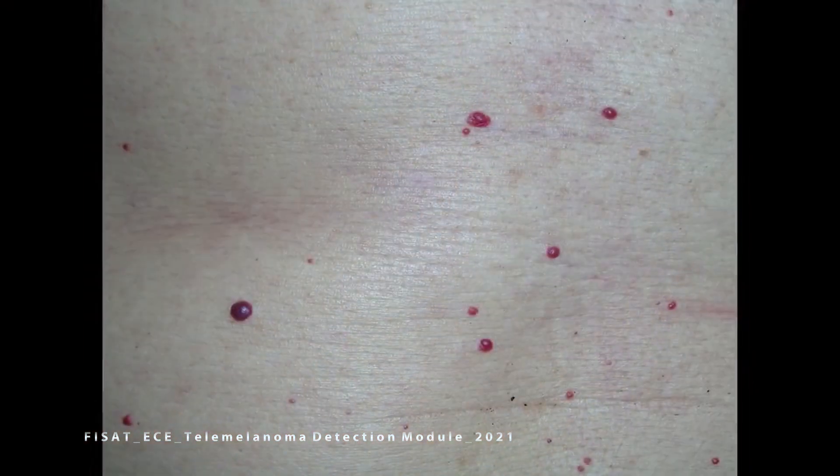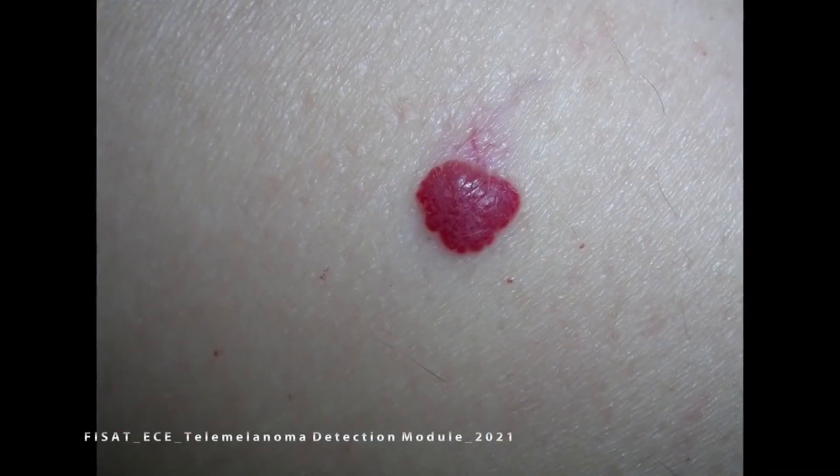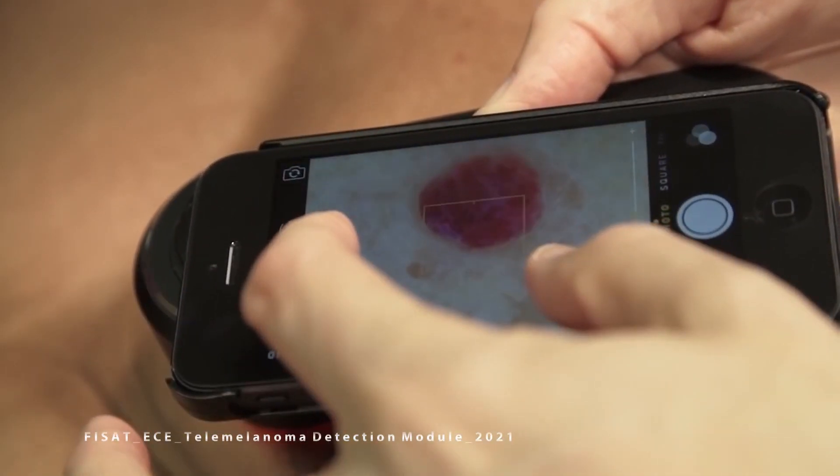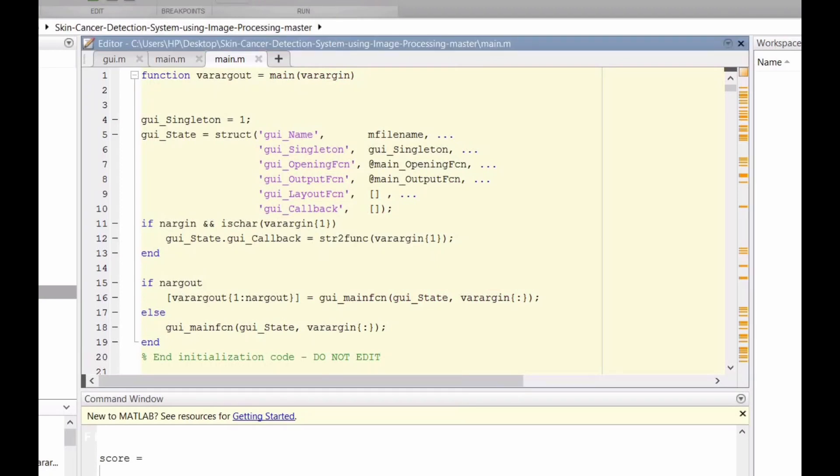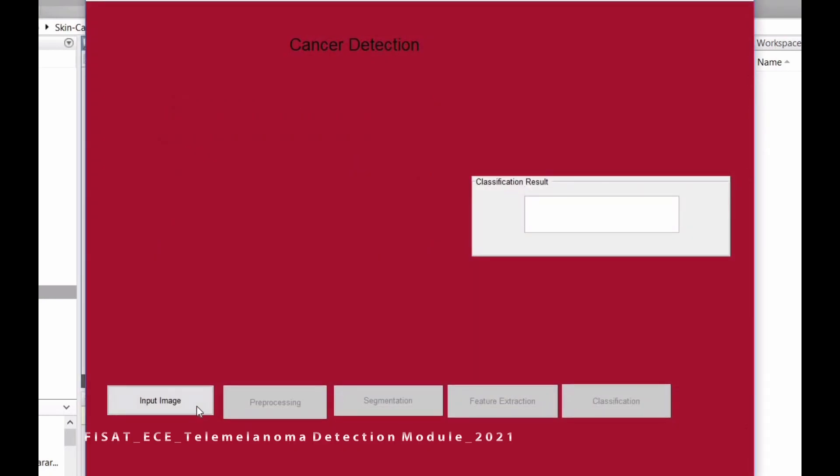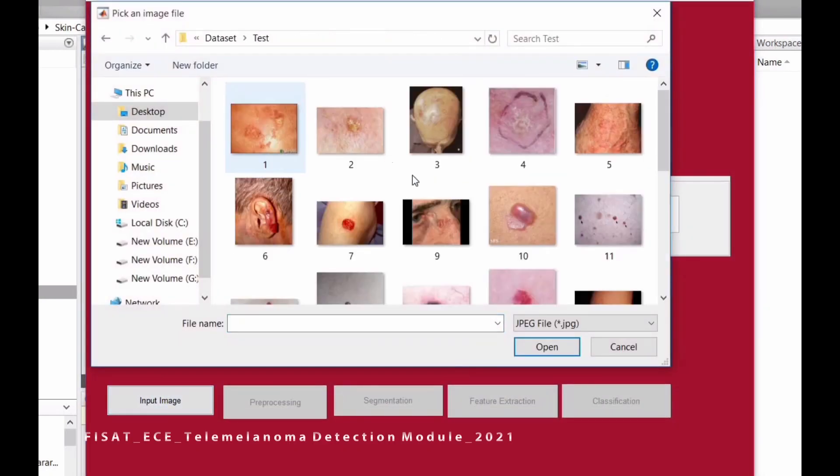This can be performed using MATLAB software. The PH2 dermoscopic image database is used for testing purposes. We capture the image using a high-resolution camera and provide the test image as input.